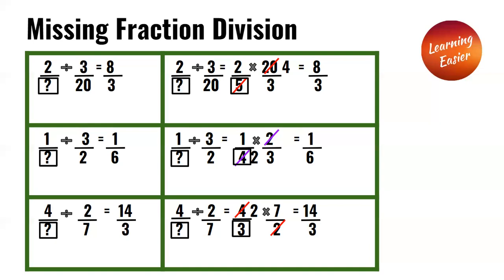4 over something divided by 2 over 7 is equal to 4 over something times 7 over 2. The 4 and the 2 can be simplified by 2, in which 2 becomes 1 and 4 becomes 2. Since the denominator of the answer is 3 and the denominator of the second fraction becomes 1 when simplified, the missing number has to be 3.